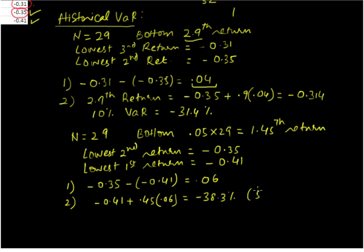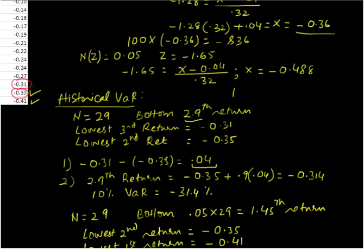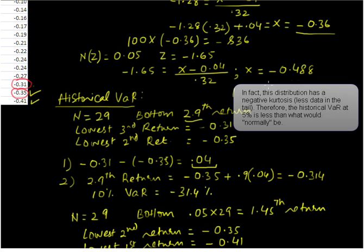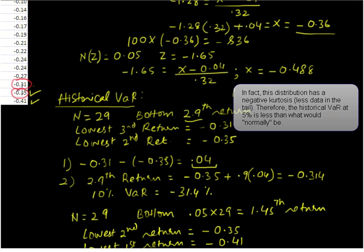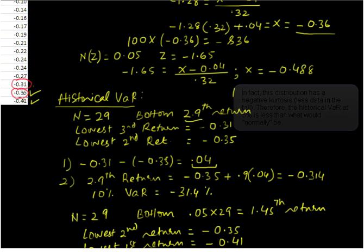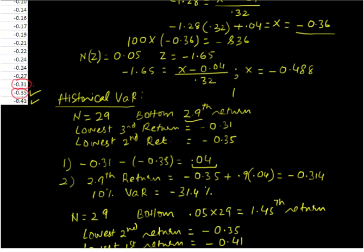Comparing that with the normal VaR: the normal VaR was minus 48.8%, while the historical VaR is minus 38.3%. The difference is because this data set may not be normal enough — which is likely true given it has only 29 observations. In the next video we are going to use the same data set to compute the normal and historical VaR in Excel. See you later.